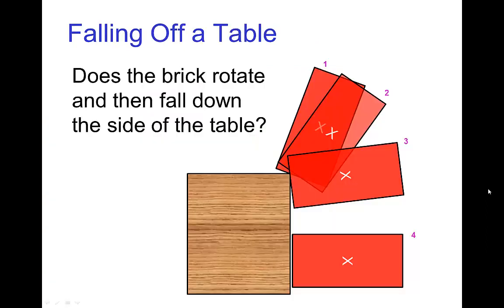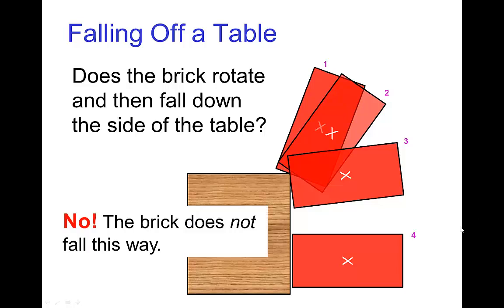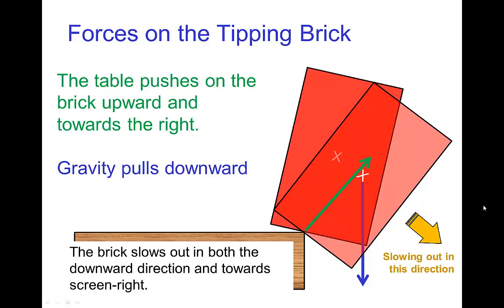One more thing about tipping. You realize that if a brick rotates and falls off the side of the table, it is not going to fall this way, it doesn't rotate around and then fall straight down the side. What actually happens is, as a brick is tipping over and rotating, there's two forces at work here. There's gravity, which is pulling the brick down, but there's also a force exerted by the table which is pushing up and away.